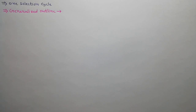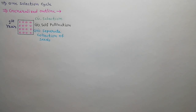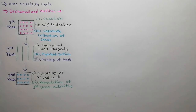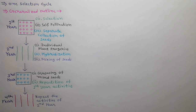The generalized outline of simple recurrent selection is as follows. In the first year, superior plants are selected, self-pollination is allowed, and seeds are collected separately. In the second year, individual plant progenies are developed, crosses are allowed in all possible combinations, and equal amounts of seeds from each cross are mixed. In the third year, mixed seeds are grown and the activities of the first year are repeated. In the fourth year, the activities of the second year are repeated.